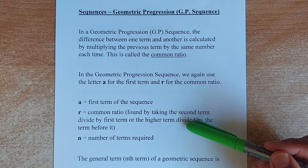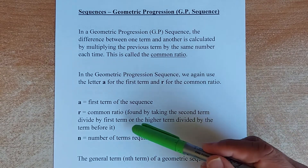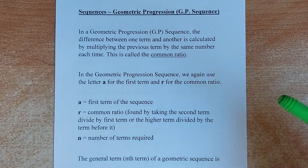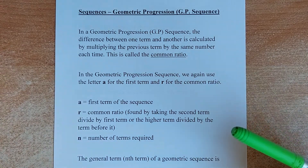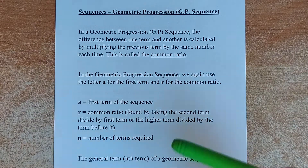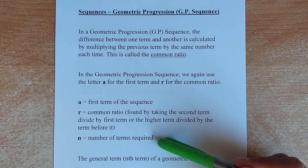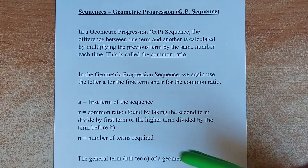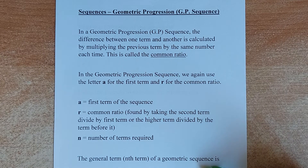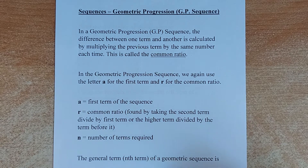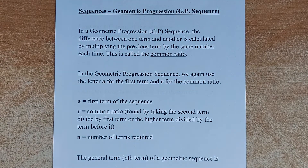R is found by taking the second term divided by the first term, or the higher term divided by the term before it. For example, you take the fifth term and divide by the fourth term, you will still get the ratio. N is the number of terms required. The first thing we are going to learn is to calculate the general term of a GP, and the formula is TN equals A multiplied by R to the power of (N minus 1).